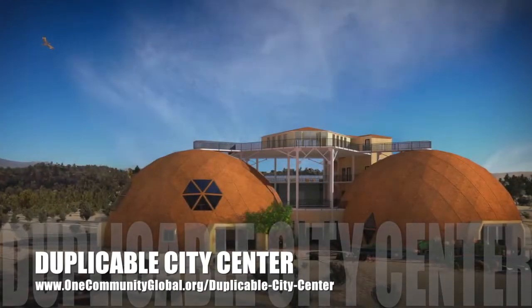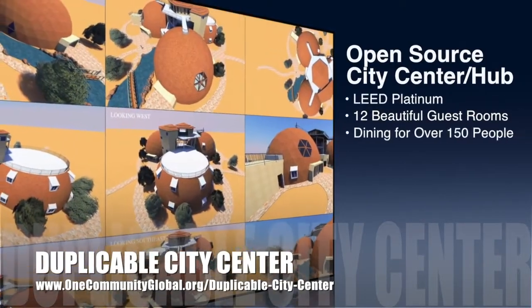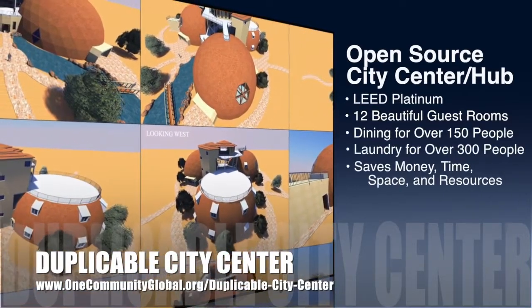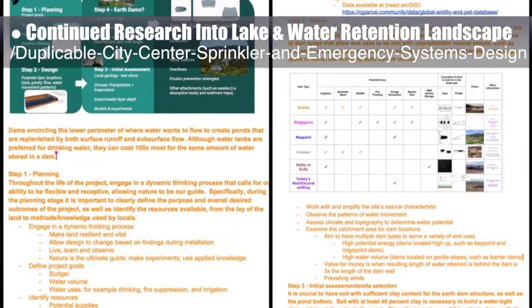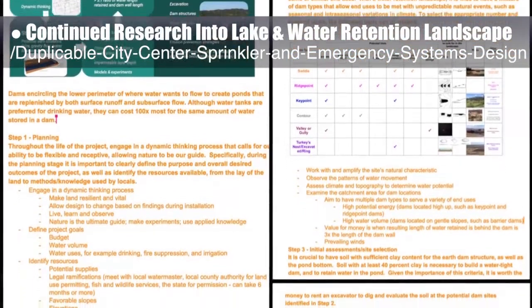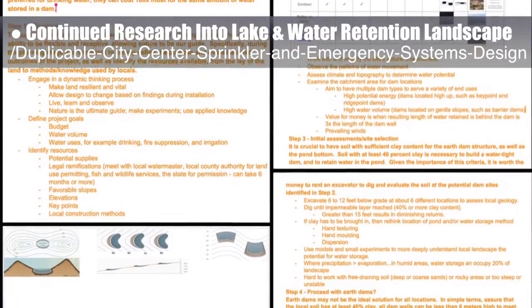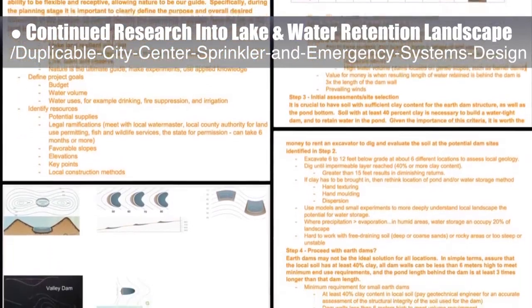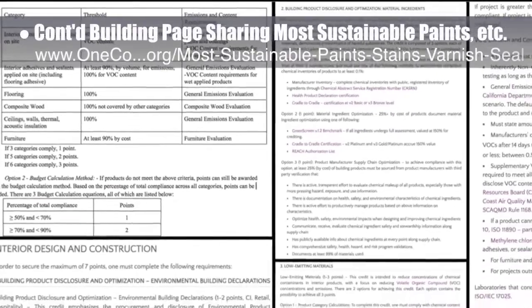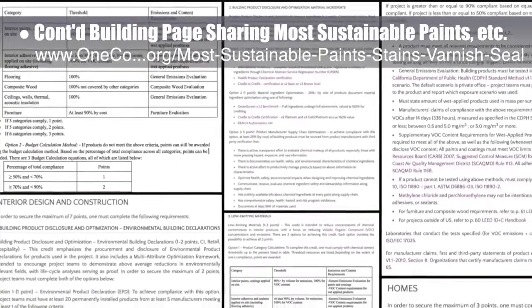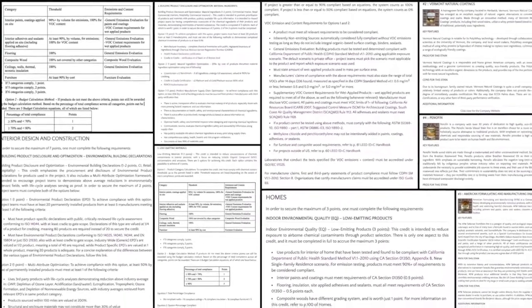One Community is also creating an open source duplicable city center, designed to be LEED Platinum certified, provide 12 guest rooms, dining for over 150 people, and laundry and recreation space for over 300 people, all while saving money, time, space, and resources. This week, the core team continued week six of research into lake and water retention landscape creation as an alternative water source for the duplicable city center's sprinkler and emergency systems, agriculture, and gray water processing. We focused on describing design specifics and different applications of various kinds of dams. The core team also continued building a new page sharing the best, safest, and most sustainable paints, stains, varnishes, and sealants — finishing the LEED tutorial section and adding the best sources for sustainable stains.